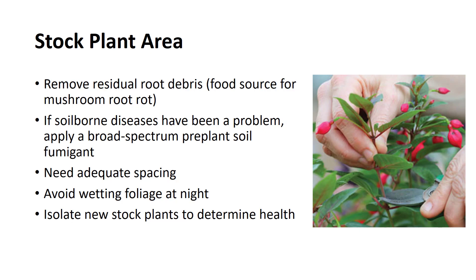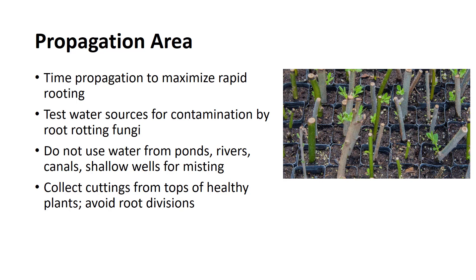For woody ornamental species with persistent foliar disease problems, irrigation should occur between mid-morning and early afternoon. Wetting foliage prior to night hours should be avoided. Daytime watering has been shown to reduce foliar disease severity for some species. Precautions should be taken to ensure that stock plants remain healthy. Isolate all new stock plants to determine their health status prior to introduction into the existing nursery stock block. Propagation cycles of a particular species should be timed to maximize the most rapid rooting for that species, which would limit exposure of cuttings to potential cutting or root-rotting organisms.